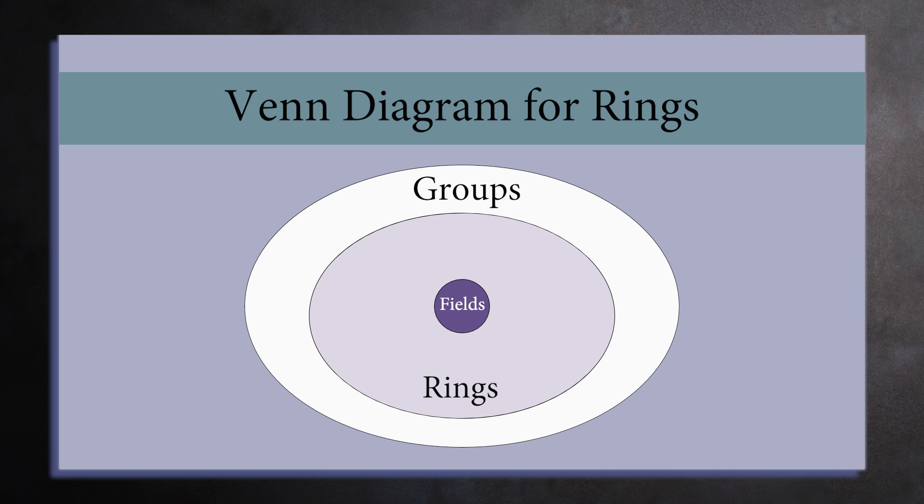From the examples that we've seen, we can add more details to this diagram. Inside the set of rings are the commutative rings and the rings with identity. Every field is commutative and has an identity. So the set of fields lies in the overlap between commutative rings and rings with identity.